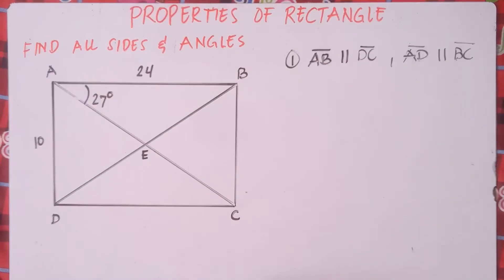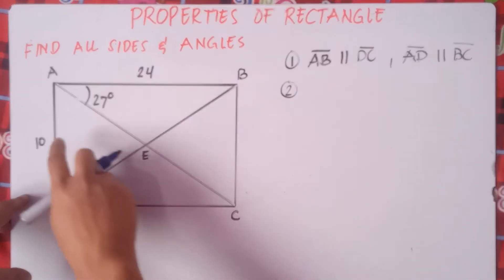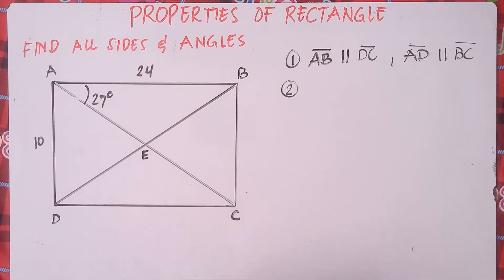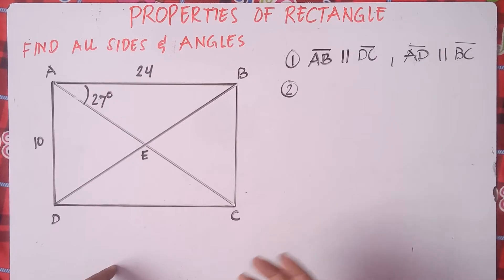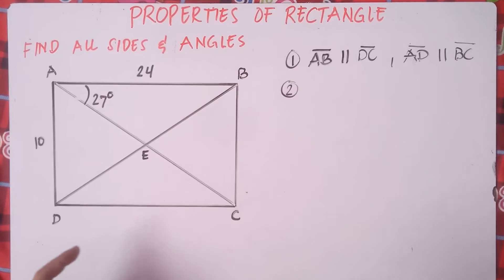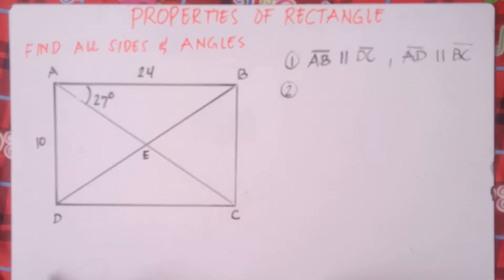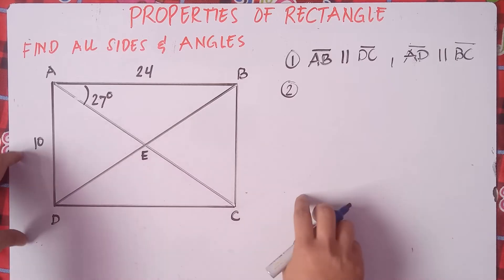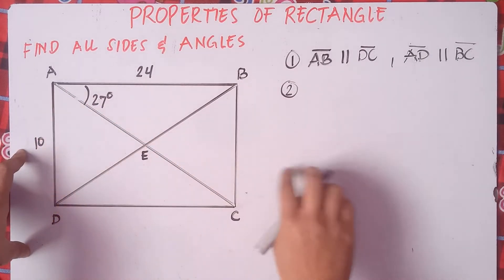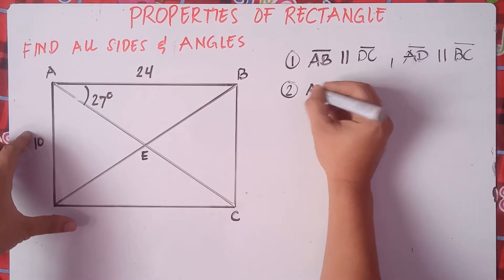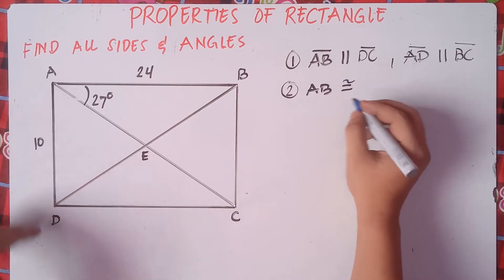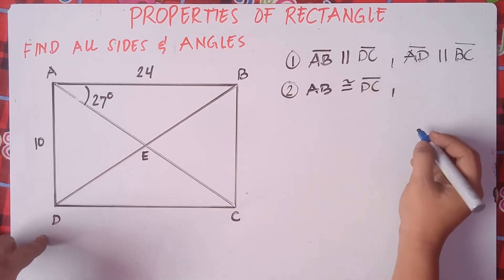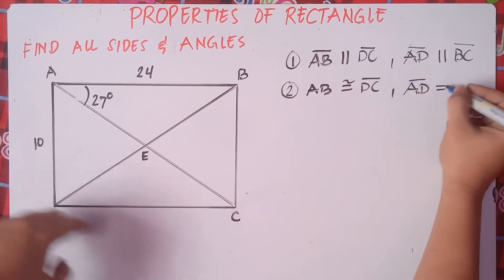That's the first property. The second property says that the opposite sides are equal. By the way, class, a rectangle is a special case of a parallelogram, so most of their properties are actually the same — I'll put the link in the description. So line AB is congruent to line DC, and line AD is congruent to line BC.